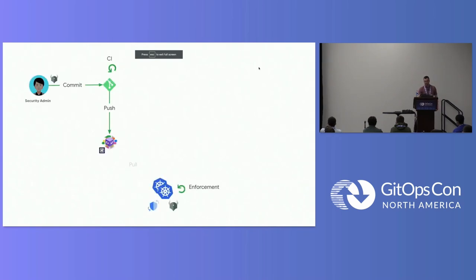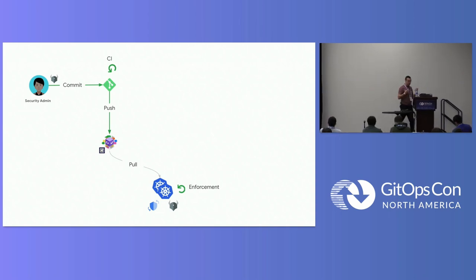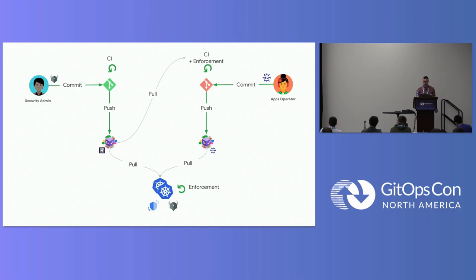Closing the demo: the first demo was about the security admin designing and coding their security policies, having their own CI pipeline, and exposing Gatekeeper policies as OCI artifacts, with ConfigSync as a GitOps controller pulling and deploying those policies across clusters. The second demo was about the apps operator with shift-left enforcement — grabbing the policies in the CI pipeline before exposing the Helm chart in an OCI registry, then pulling the Helm chart to deploy the app.